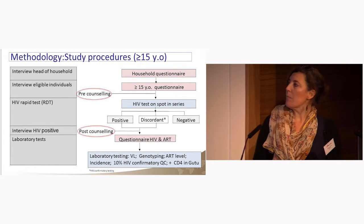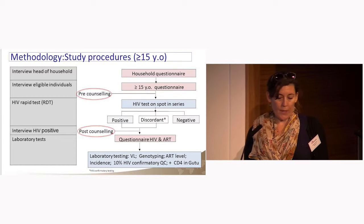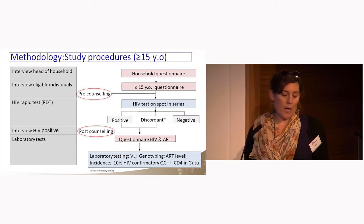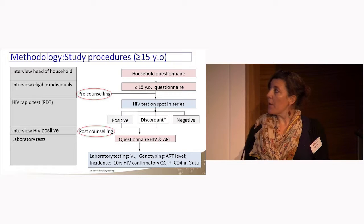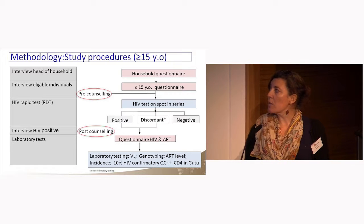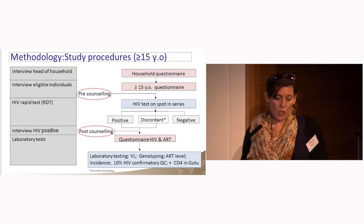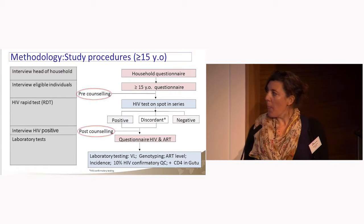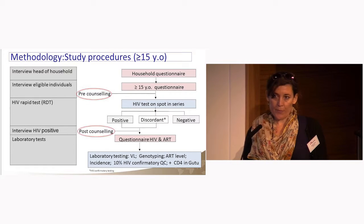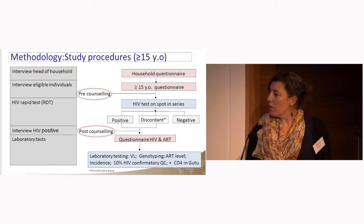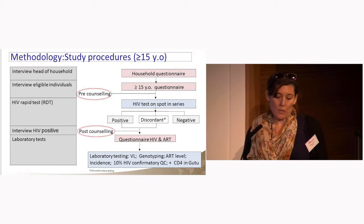In terms of study procedures, the team went to randomly selected households and asked the head of household for consent before conducting the household questionnaire. Through this, they identified all eligible individuals and, after receiving their consent, performed the adult questionnaire. Participants then had a pre-counselling session before HIV testing on the spot. For those who tested positive or had discordant results, they received a post-counselling session and a questionnaire on HIV and ART. Blood was also drawn for additional testing including viral load, genotyping, ART blood levels, and incidence. CD4 testing was also conducted in GU2.